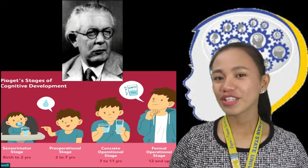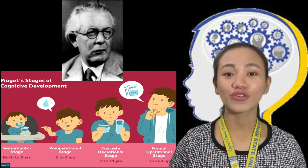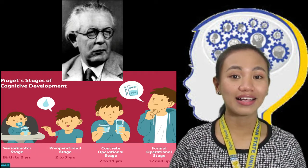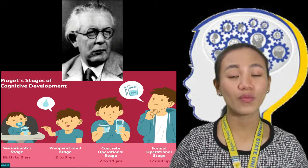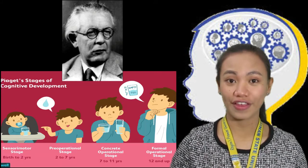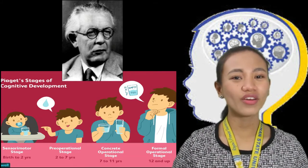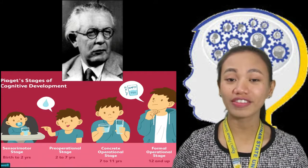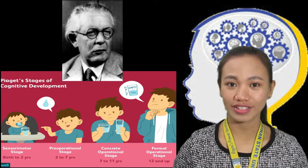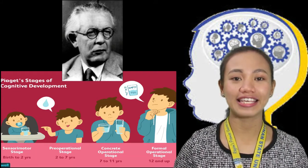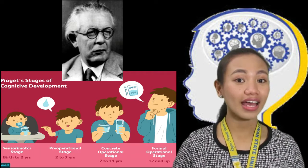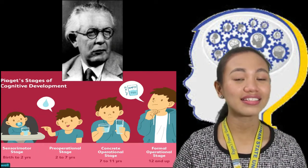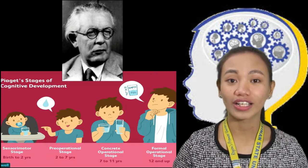What Piaget wanted to do was not to measure how well children could count, spell, or solve problems as a way of grading their IQ. What he was more interested in was the way in which fundamental concepts like the very idea of number, time, quantity, causality, justice, and so on emerge.